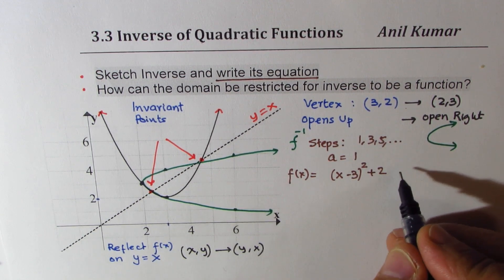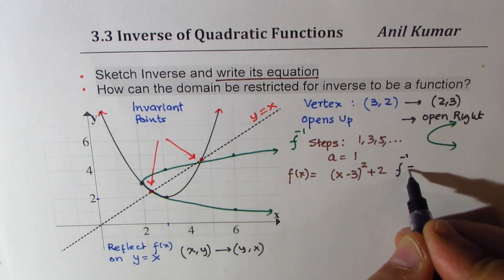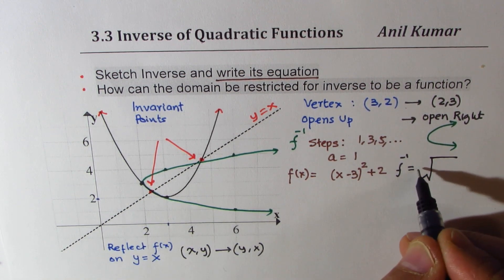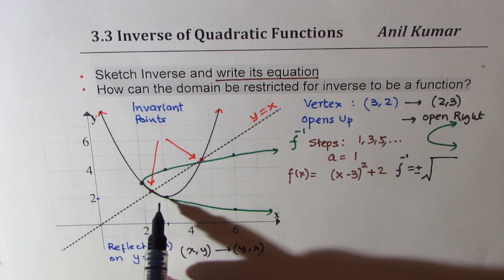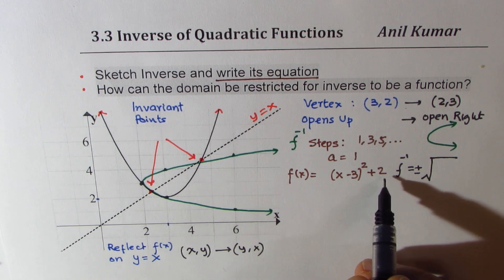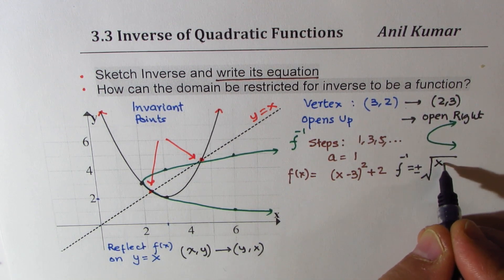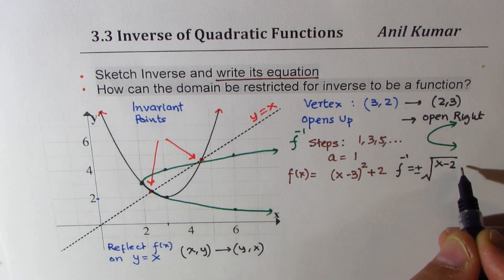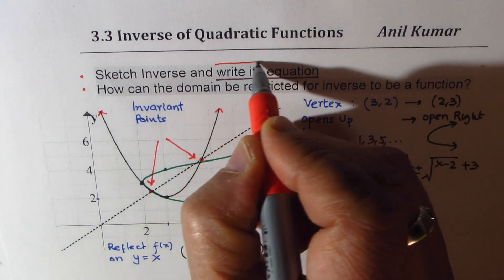For the inverse function, I'm not writing f⁻¹(x) since it is not a function. The inverse is a square root function, which we write with plus and minus. The values 2 and 3 swap. Working in reverse order: first subtract 2, then take the square root with plus and minus, then add 3. So the inverse equation is ±√(x − 2) + 3. That is how you get the inverse function's equation.